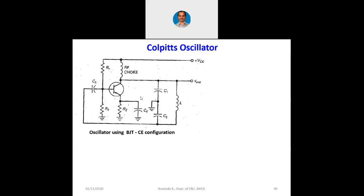Otherwise it is an amplifier with a feedback network. Now why is there an RF choke? RF means radio frequency; choke means basically an inductor. We used to have a collector resistance earlier — instead it is replaced by an RF choke. What may be the purpose of this RF choke?